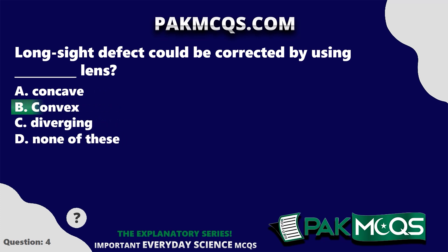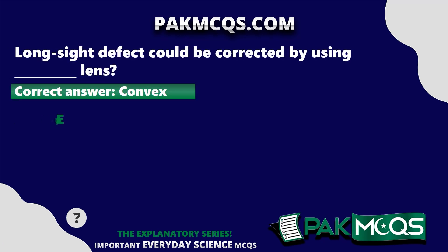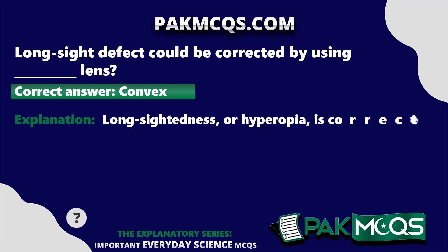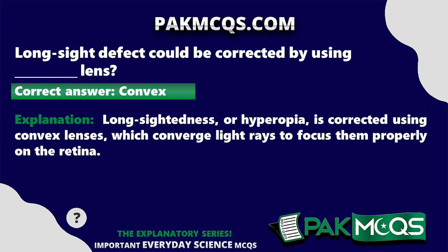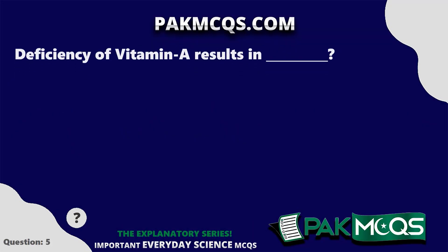Long-sight defect could be corrected by using what lens? Convex. Long-sightedness or hyperopia is corrected using convex lenses, which converge light rays to focus them properly on the retina.